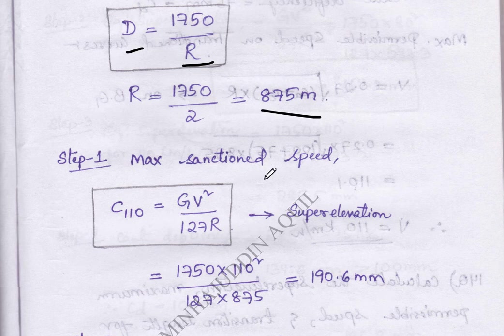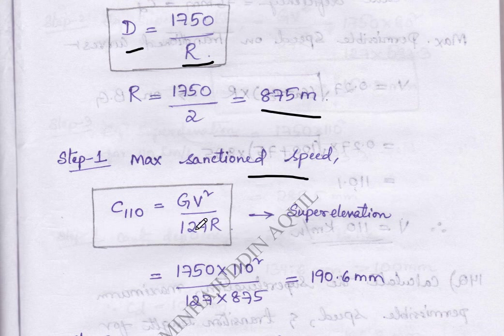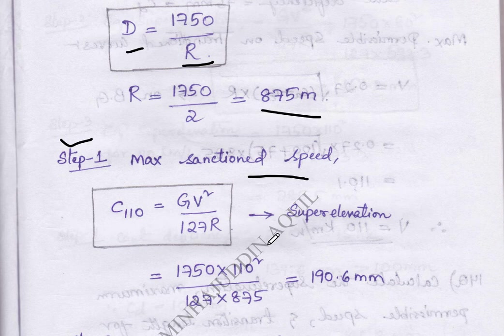First step: Maximum sanction speed superelevation can be calculated by formula GV squared by 127R. For C110 we get 19.6 mm.